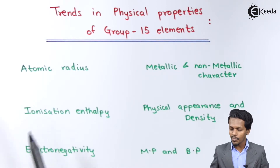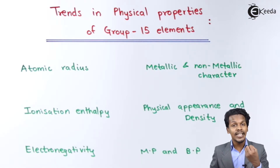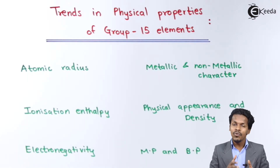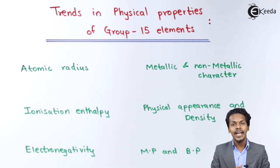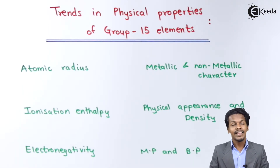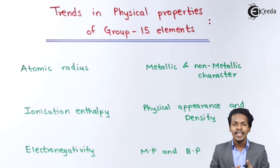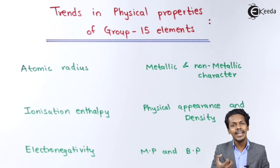Now let me talk about ionization enthalpy, which is the energy required to remove the outermost or loosely bonded electron from an atom. As we move down the group, nitrogen, being a very small element, requires higher energy to remove its electrons compared to bismuth, which has a much larger atomic radius.